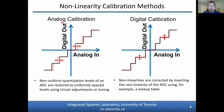Calibration can be performed in either the analog domain or digital domain. Analog calibration implies that the non-uniform quantization levels of an ADC are restored to uniformly spaced levels using circuit adjustments or tuning. Digital calibration implies that the nonlinearities are corrected by inverting the nonlinearity of the ADC using, for example, a lookup table. In digital calibration, the quantization levels remain non-uniform during operation and may result in varying degrees of quantization error depending on the input distribution applied. All-digital calibration techniques can be desirable because they do not require additional analog circuitry.